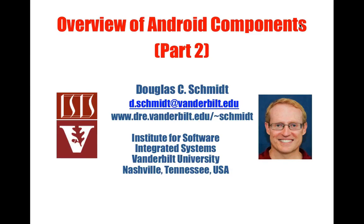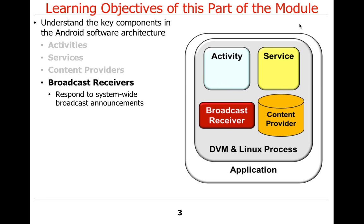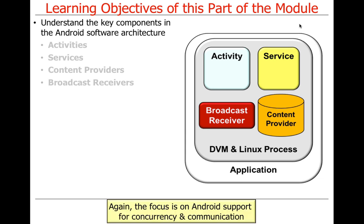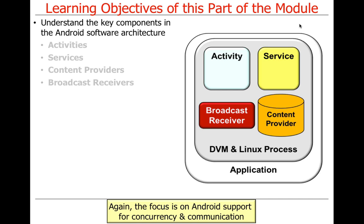I'd like to continue on with the overview of Android components. This part of the discussion focuses on content providers, broadcast receivers, and intents. The focus on all this stuff is really on things that are used for concurrency and communication, although this stuff is used for other things as well.